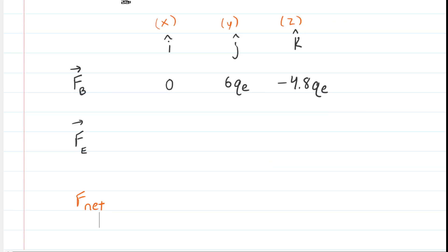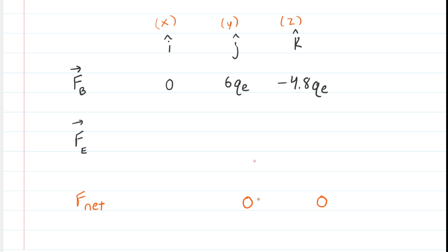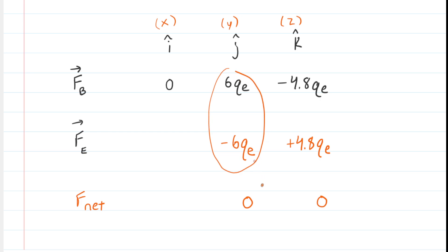Here's a table organizing the two forces. Remember, there's not just a magnetic force — there's also an electric force present because an electric field is present. We claimed the net force in the y and z directions is zero, which means the electric force must have a y component of negative 6·q_e and a z component of positive 4.8·q_e, so that when added to the magnetic force components in those directions, the result is zero.